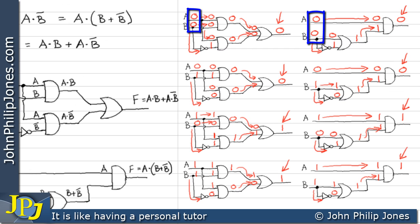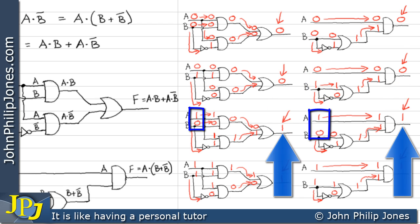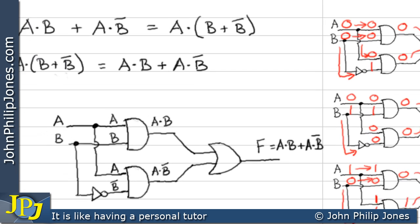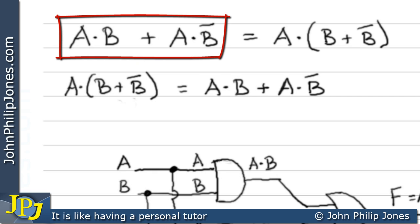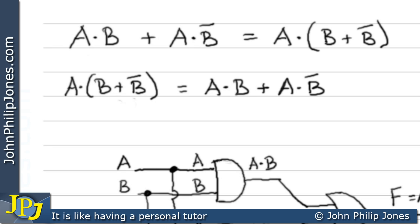So we can see that when both inputs are zero, both outputs are zero. When the inputs are zero and one, both outputs are zero. When the inputs are one and zero, both outputs are one. And when both inputs are one, both outputs are one. Consequently, we can see that these logic circuits have the same logic functionality, and therefore we are correct in saying that these two expressions are the same, because their combinational logic circuits can be shown to give exactly the same functionality.